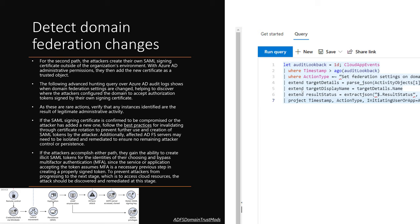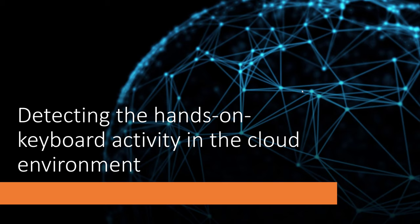If the attackers accomplish either path, they can create illicit SAML tokens for the identities of their choosing and bypass MFA, since the service or application accepting the token assumes MFA was a necessary previous step in creating a properly signed token. To prevent attackers from progressing to accessing cloud resources, the attack should be discovered and remediated at this stage, again leveraging advanced hunting queries.